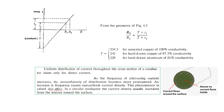The skin effect: when DC current flows, the current is uniform across the cross-sectional area. But when AC current flows, because of the changing frequency, electrons are displaced to the outside of the conductor wall, and the resistance increases due to the skin effect.